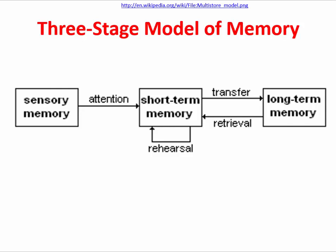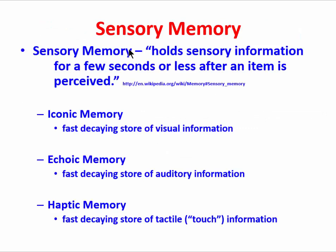Having introduced the three-stage model of memory — sensory memory, short-term memory, and long-term memory — let's say a little bit more about each. The first stage is sensory memory, which we can define as the portion of memory that holds sensory information for a few seconds or less after an item is perceived. Some examples: iconic memory refers to fast-decaying visual memories lasting only about a second; echoic memory is the fast-decaying store of auditory information; and haptic memory is the fast-decaying store of tactile or touch information. These are different varieties of sensory memory, and they last only for a few seconds.